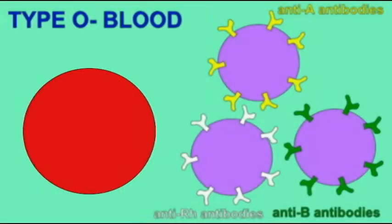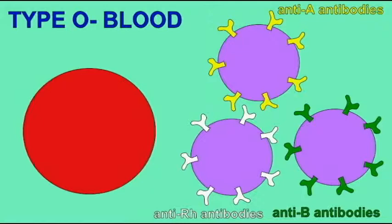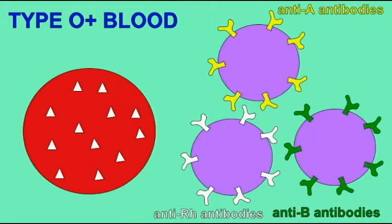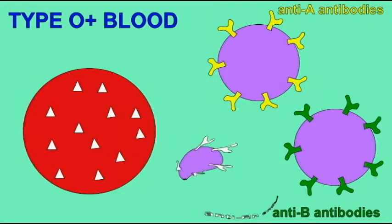Individuals with blood type O negative do not have A, B, or RH antigens on their red blood cells, and therefore they would make anti-A, anti-B, and anti-RH antibodies from white blood cells. Individuals of blood type O positive have RH antigens on their red blood cells. They would not make anti-RH antibodies, and would only make anti-A and anti-B antibodies from white blood cells.